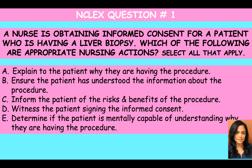We have choices A through E, and remember this is select all that apply — there is going to be more than one response. Choice A: explain to the patient why they are having the procedure. B: ensure the patient has understood the information about the procedure. C: inform the patient of the risks and benefits of the procedure. D: witness the patient signing the informed consent. E: determine if the patient is mentally capable of understanding why they are having the procedure.